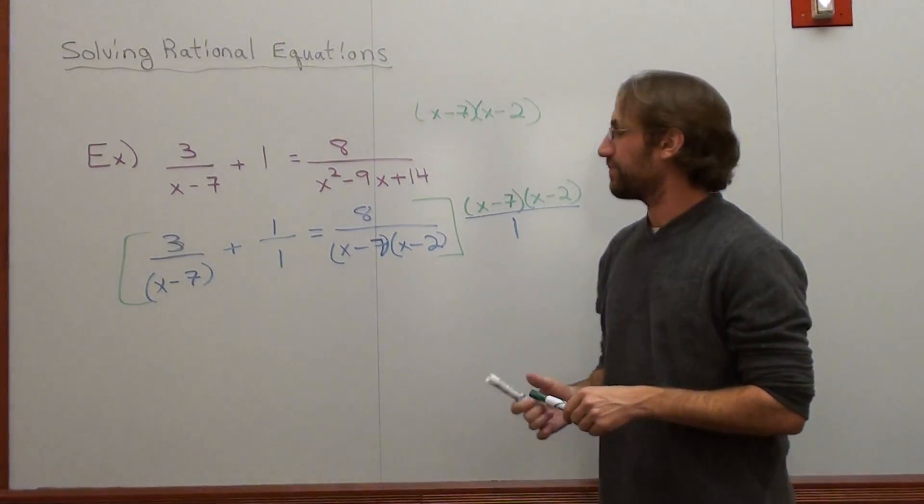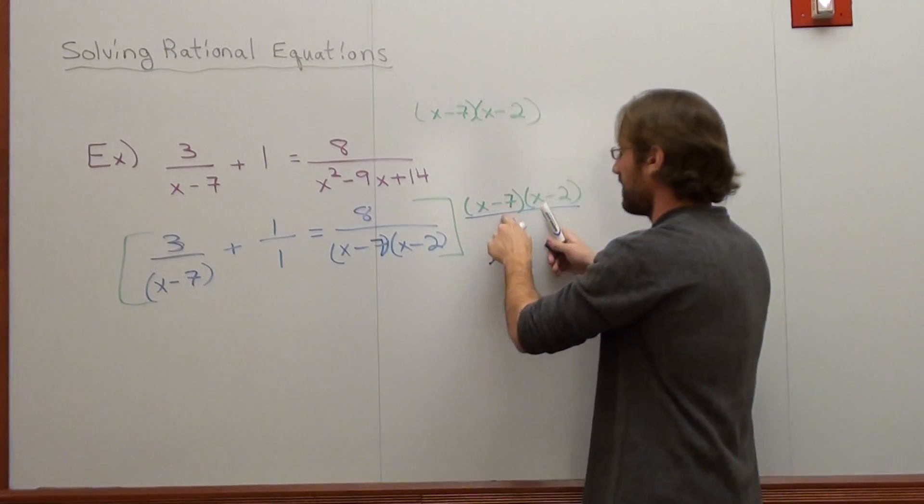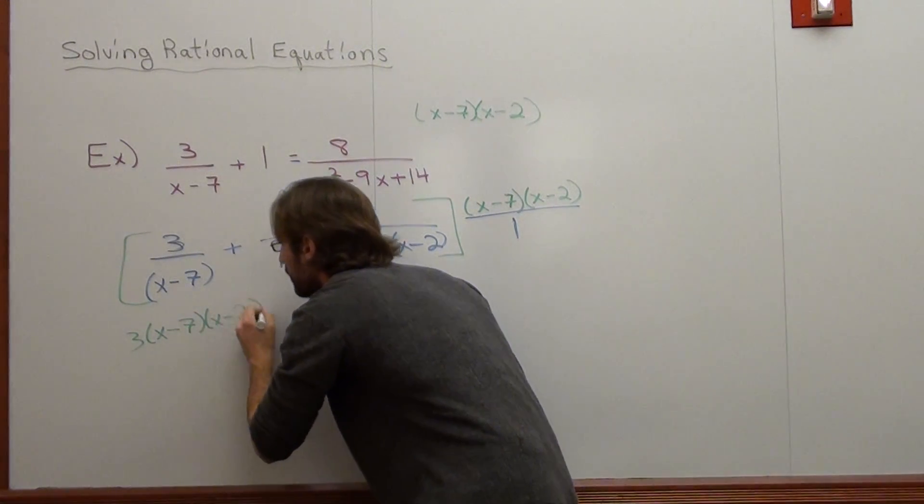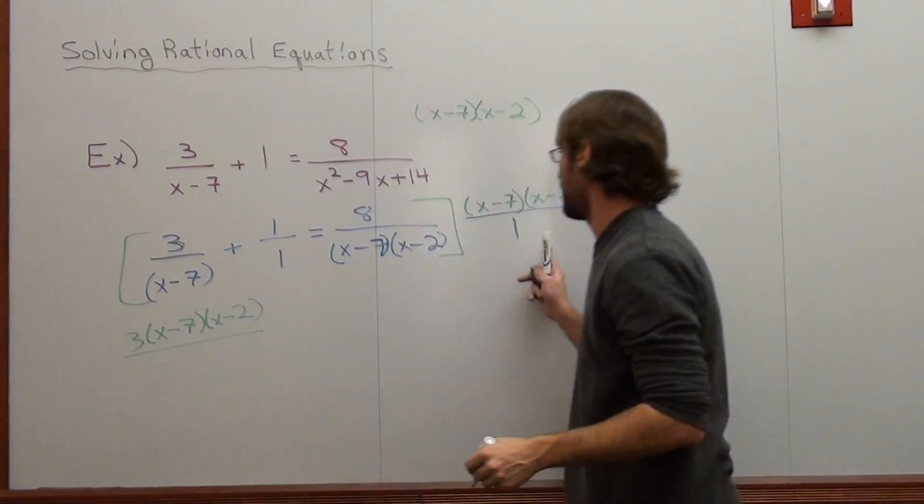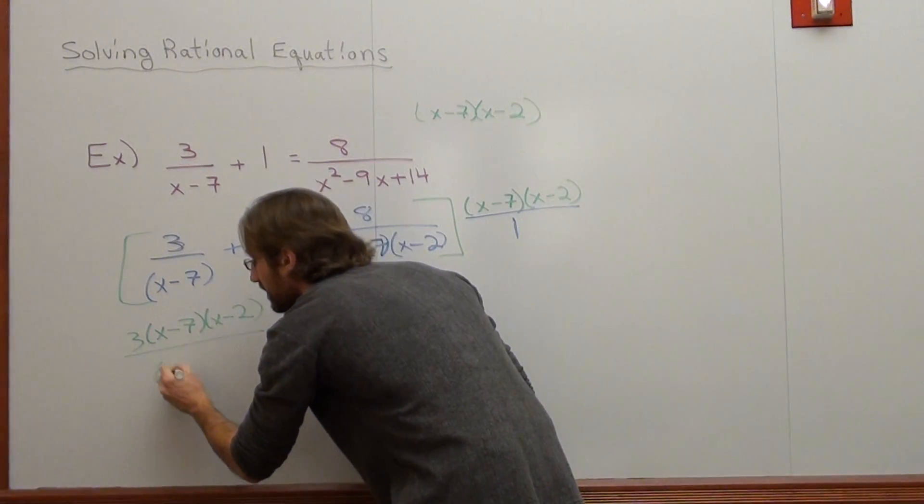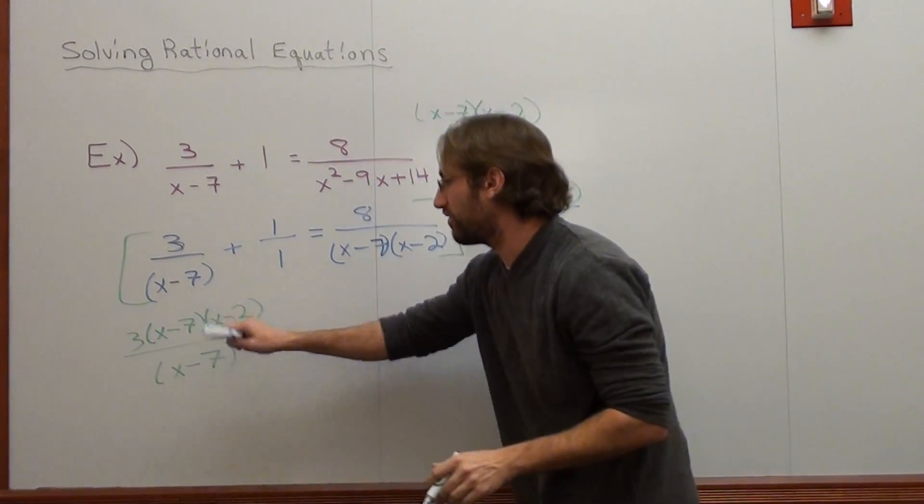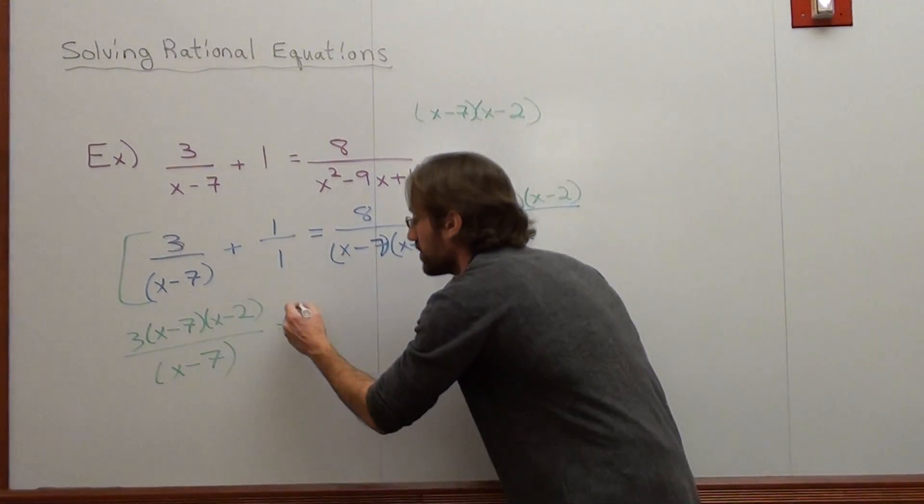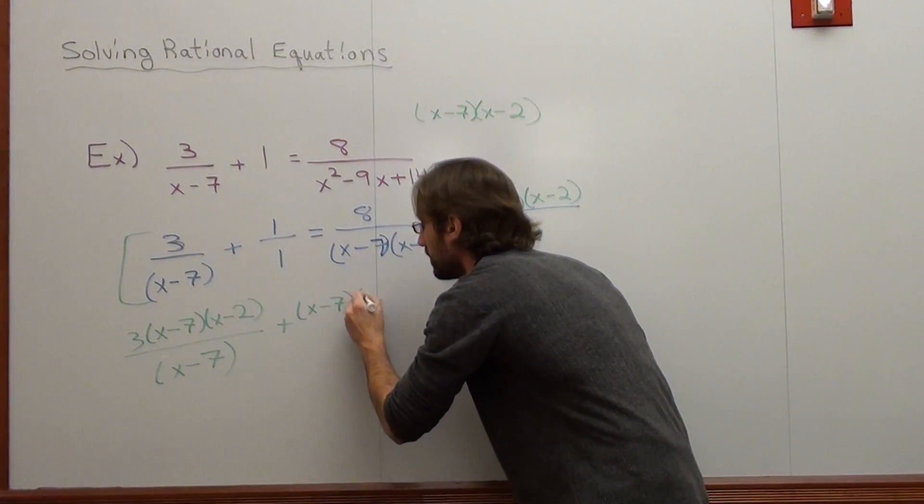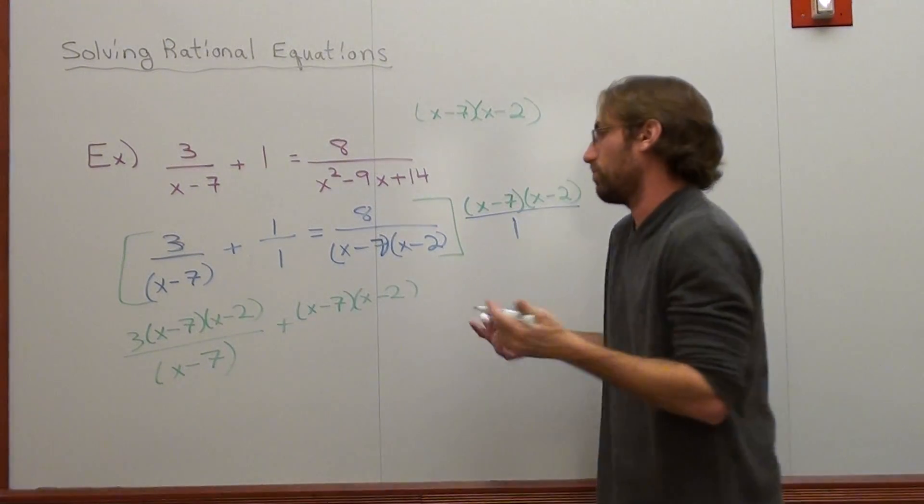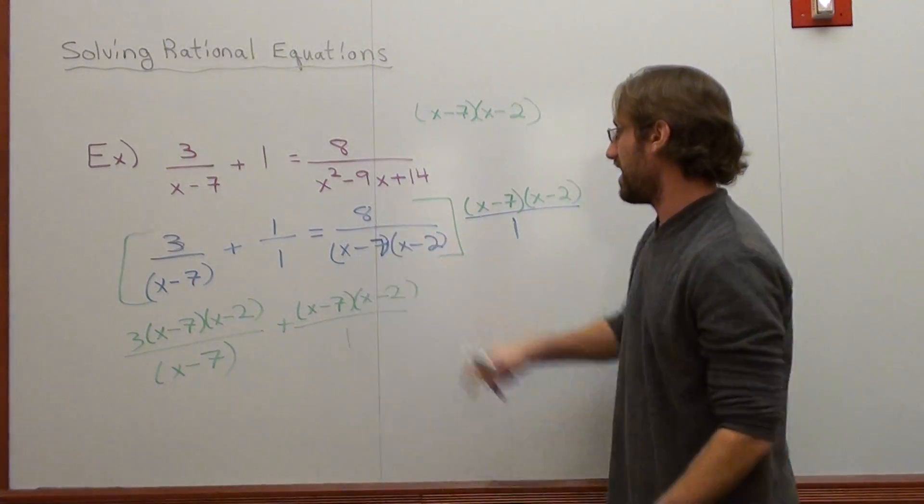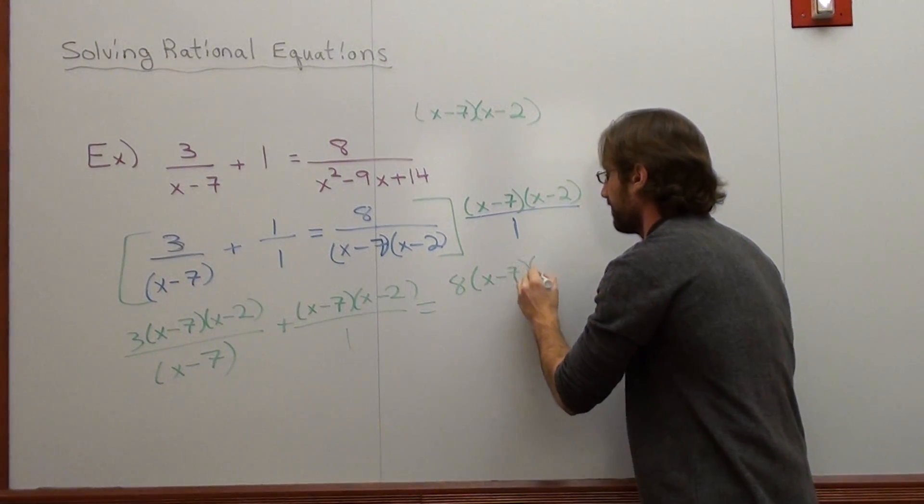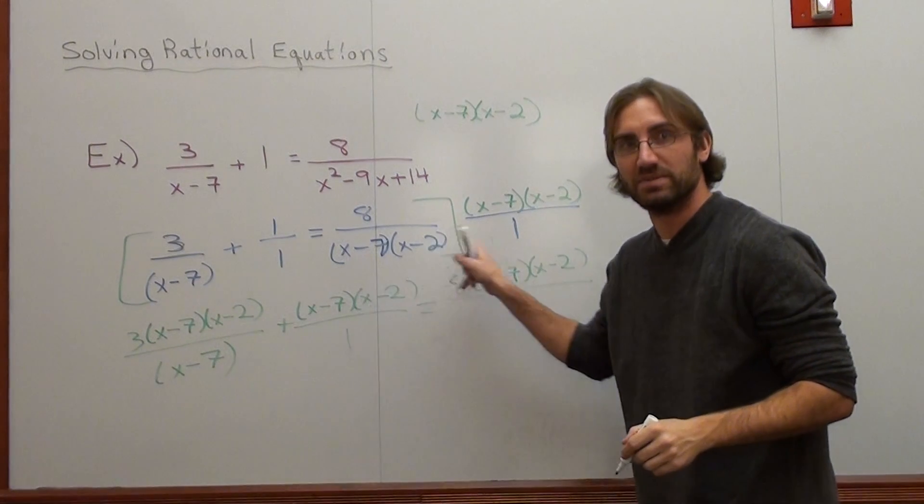That seems like it's difficult, but it's not really. So I've got 3 times x minus 7, x minus 2, over x minus 7 times 1, which is just x minus 7. And I'm going to leave it in quantities. I'm not going to foil it out yet. Plus x minus 7, x minus 2 times 1, which is just x minus 7, x minus 2, over 1 times 1, which is just 1. And then I've got 8, or excuse me, equals 8 times x minus 7, x minus 2, over x minus 7, x minus 2 times 1.